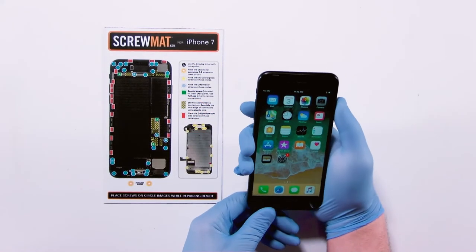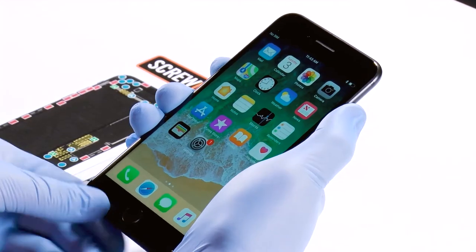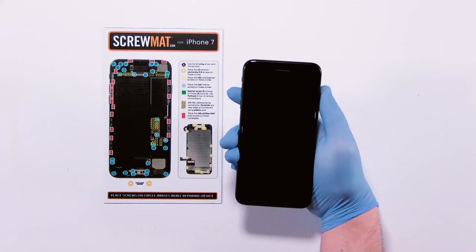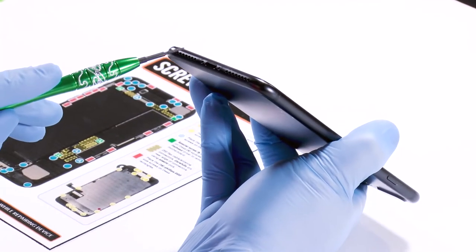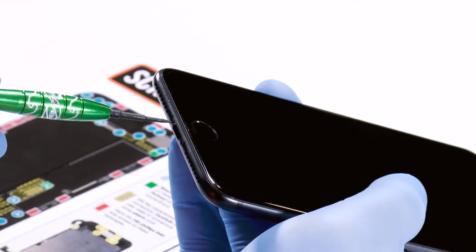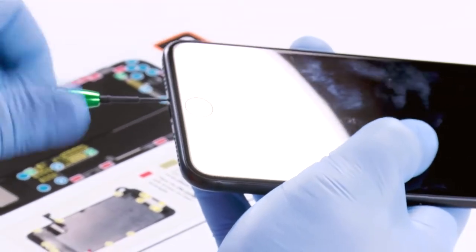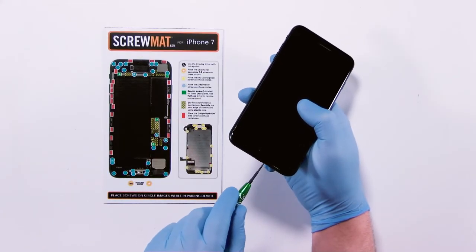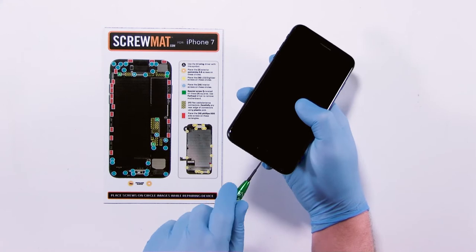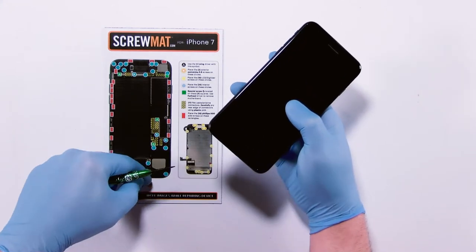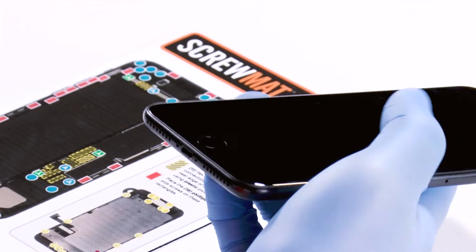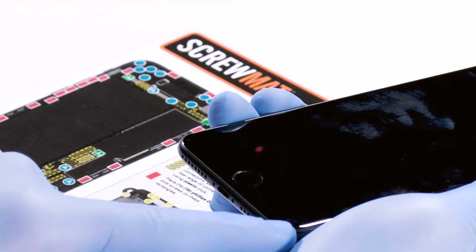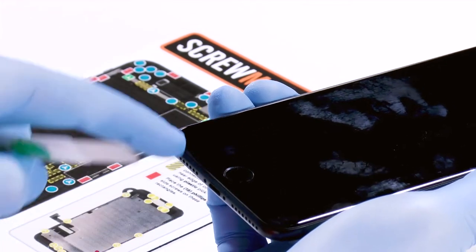Before you get started make sure your device is powered off. Pull the power button down here and slide to turn off. To get into it you'll take your two screws out here with your pentalobe driver and I'm going to place it on my screw mat here to stay organized. When those are out now we're going to take our thin iSesamo and go around the edges. It's got adhesive.